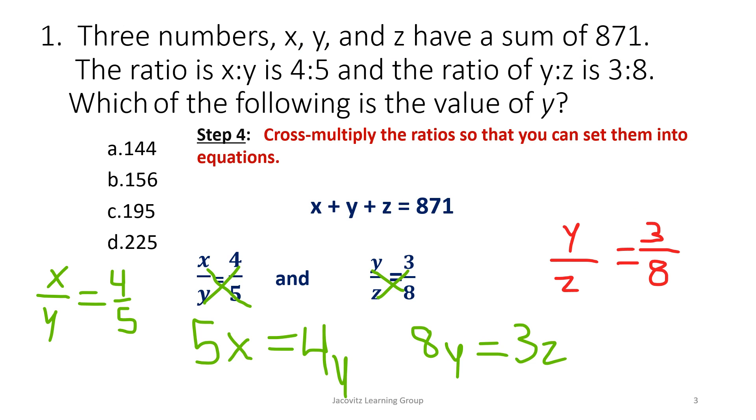Okay, you want to cross multiply and start figuring things out. So when you have x, y is 4 to 5, and it's always whatever is what's given. It's always the first variable that's given. So the first variable given was x, and then when you come back up to the equation, the first variable given here was y. So you put y here, you have it here, x to y, 4 to 5, and y to z is 3 eighths.